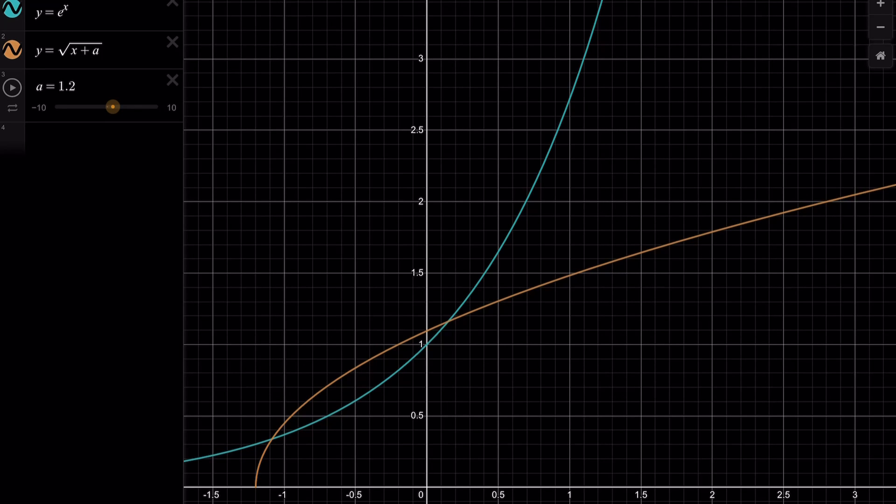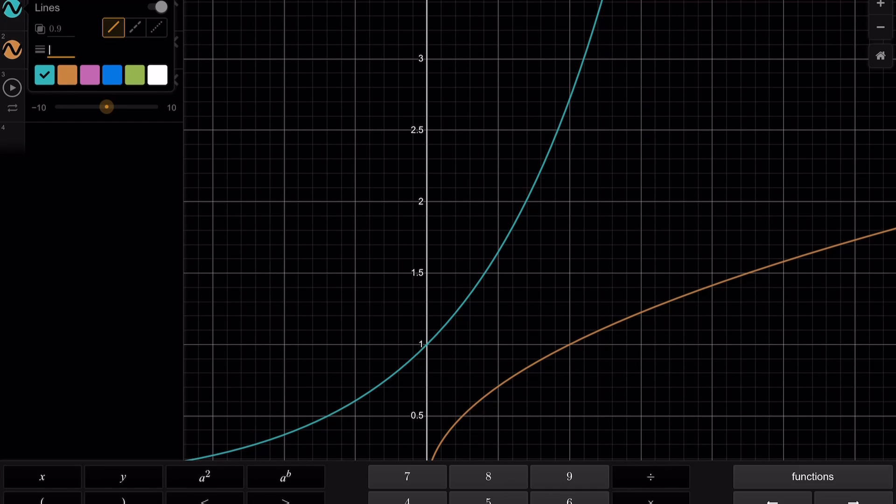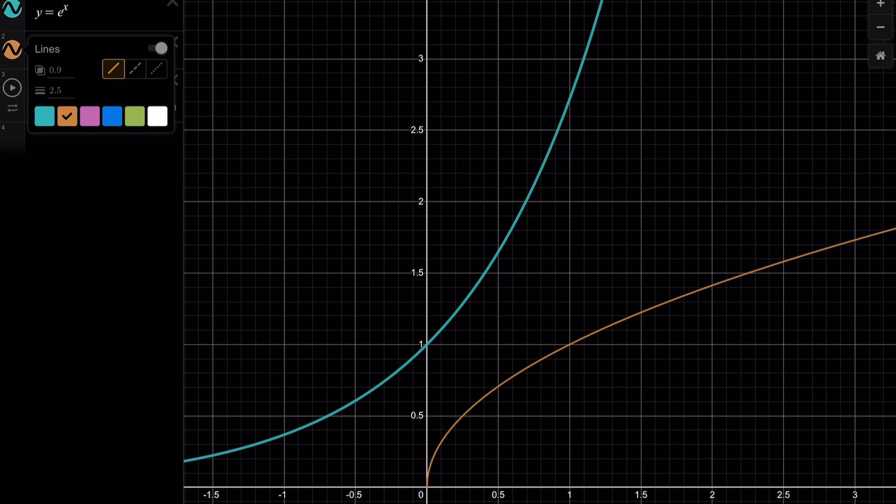So here's our graph in Desmos. So basically I graph y equals e to the power of x and y equals square root of x plus a for you. And then I had to set an a value because this is basically a ruler. You can basically change the value. If you want to set a equal to 0, you can. If a is 0, you're basically talking about square root of x and e to the power of x. Obviously, these two graphs do not intersect. And I could probably improve this graph a little bit better.